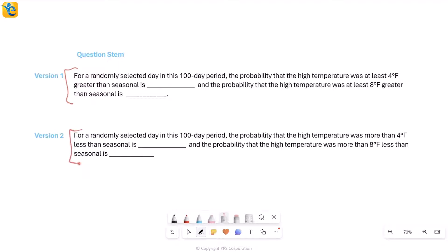The difference is only in the question stem; the data set is exactly identical. Version one and version two - most of it when you see it at a glance, it's hard to even tell what the difference is, but there are some differences. For example, it says at least four degrees Fahrenheit greater than seasonal, while here it says more than four degrees Fahrenheit less than seasonal. They've even used the same numbers, four and eight. It's just word play, and we'll see both of these versions one by one.